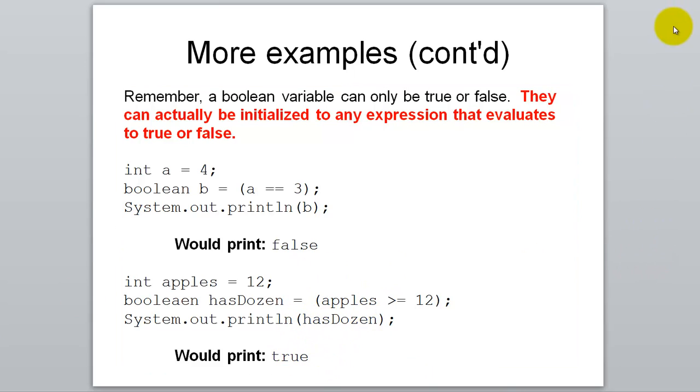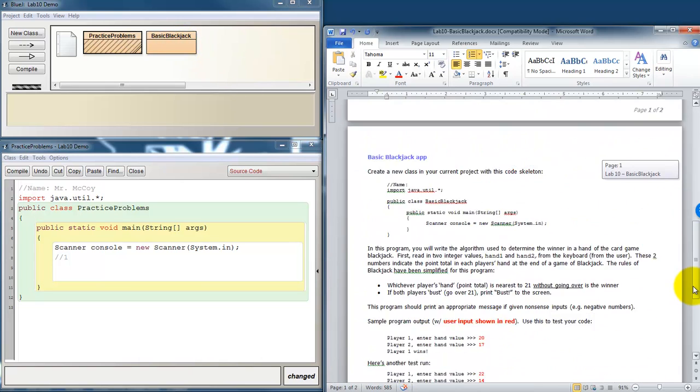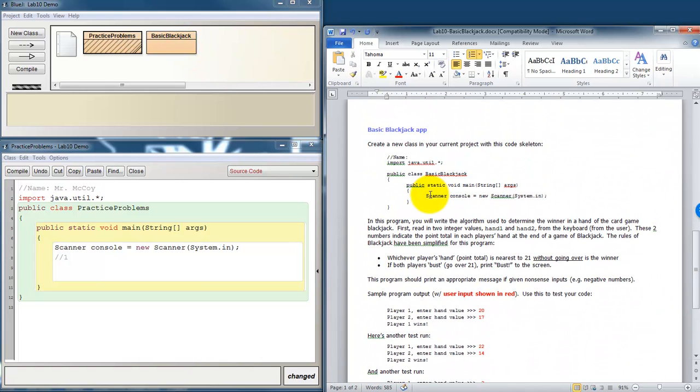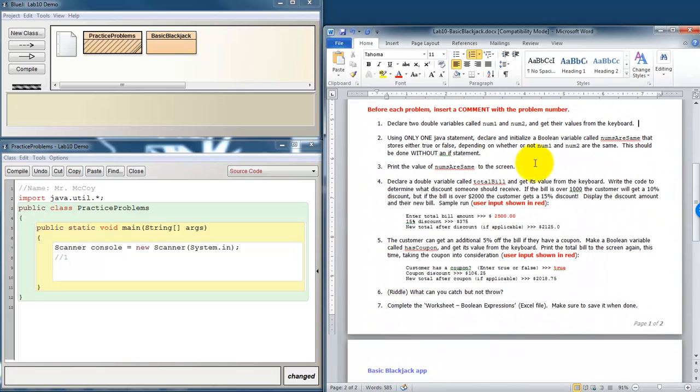Let's take a look at our labs. Okay, so I've got BlueJ open. I've got my practice problems class in my basic blackjack class, which is the app that we're going to start writing down here. It's not a fully functional blackjack game yet, but we're going to work towards that. It just starts getting us thinking about the logic behind the blackjack game. But let's take a look at our practice problems, and I'll do a couple for you.